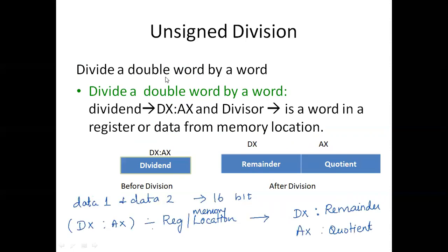In case of a 32 by 16 bit division — divide a double word by a word — the dividend is in DX concatenated with AX. The divisor is a word in a register or from the location. Before the division, we focus on DX:AX. After the division, the quotient will be in AX and the remainder in DX. Both data values are 16-bit, but we perform a 32 by 16 bit division, so DX is loaded with 00, making DX:AX a 32-bit number.